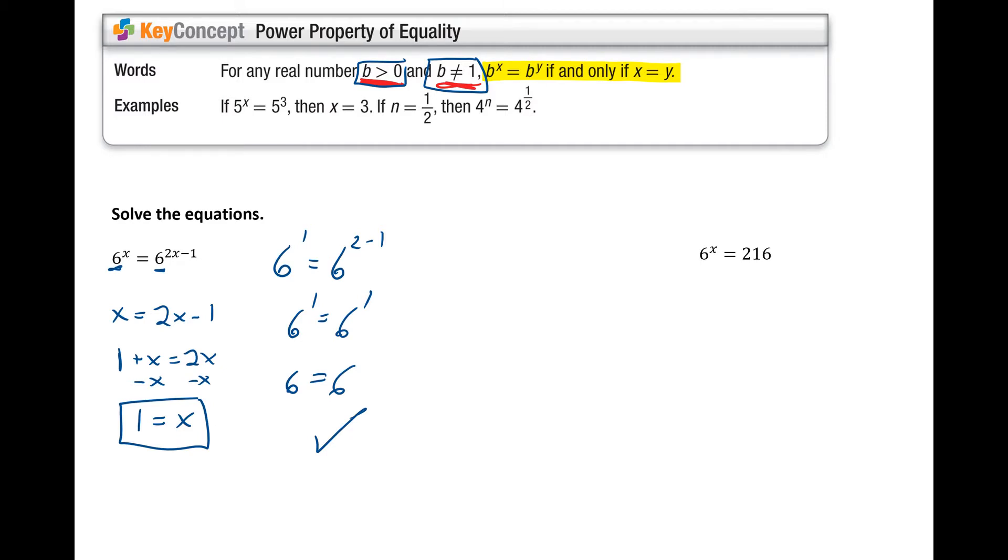Moving on to problem 2. 6^x is equal to 216. And here's where the problems get a little tricky. Because we're like, well, the bases aren't the same. I have 6 and 216. So I can't solve this equation, because the exponents are only equal if the bases are the same. But I can take a look and see, can I change either side to make the bases the same?